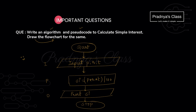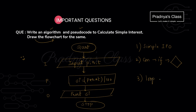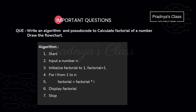To understand how to draw flowcharts, you should practice three types of programs. The first is simple, where we follow the IPO approach — input, process, output. The second is with conditional statements, where we take decisions using the diamond or decision box. The third type involves looping statements — in these we also use the decision box.